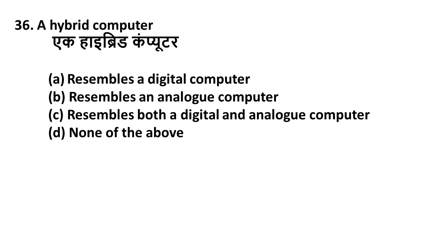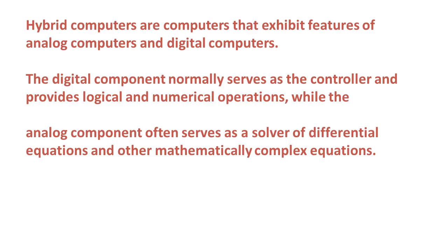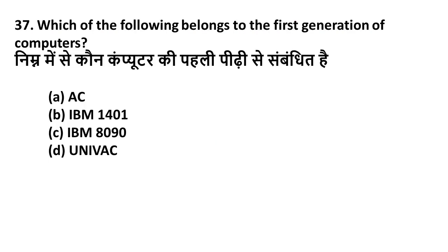Question 36: A hybrid computer — Option A: Resembles a digital computer, Option B: Resembles an analog computer, Option C: Resembles both a digital and analog computer, Option D: None of the above. A hybrid computer resembles both digital and analog computers — Option C is correct. Hybrid computers exhibit features of analog as well as digital computers. The digital component serves as the controller providing logical and numerical operations, while the analog component solves differential equations and mathematically complex calculations.